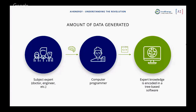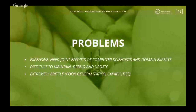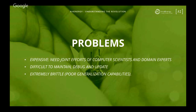Expert systems have significant problems. First, they're expensive — you need computer scientists and domain experts working together for months. Second, they are very difficult to maintain, debug, and update, because you're encoding hundreds of rules into a computer and finding bugs is very complicated. Third, and probably the toughest problem, is that they are extremely brittle: if a situation occurs that wasn't taken into consideration in the beginning, the system just fails. It only knows what you explicitly explained to it. This led to what's called the second AI winter — a commercial failure.